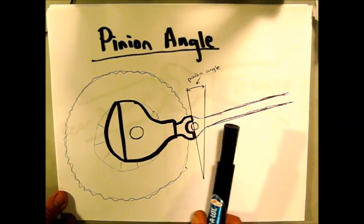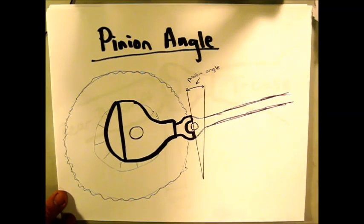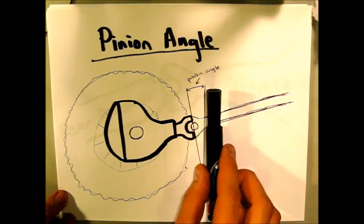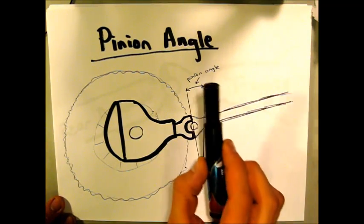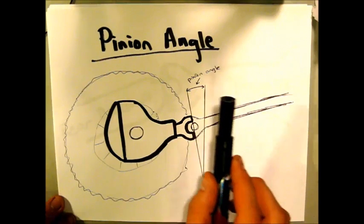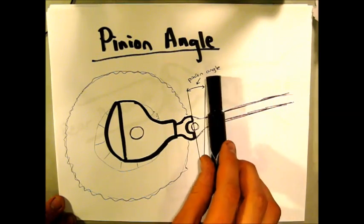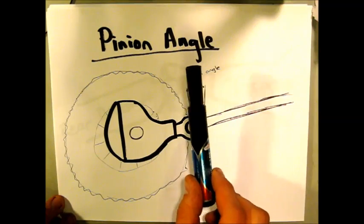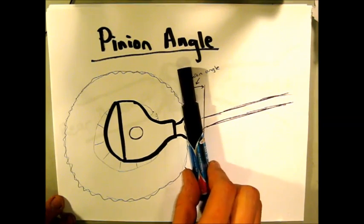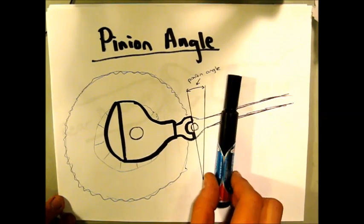And your pinion angle is going to be measured. Typically, it's going to be measured with a $10 or $15 angle tool to measure the angle. I know Craftsman sells one through Sears, and you basically hold it up flush with this yoke here, and that'll tell you the amount of degrees that it's tilted.